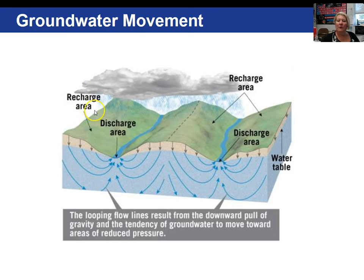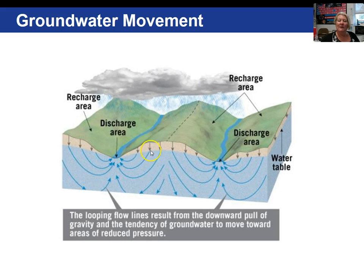This figure shows areas of recharge where water is going back into the groundwater system and areas of discharge where groundwater is going back to the surface. The reason these flow lines are curved is because they are seeking lower pressure.